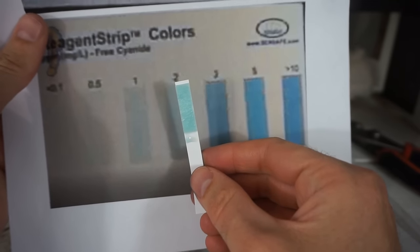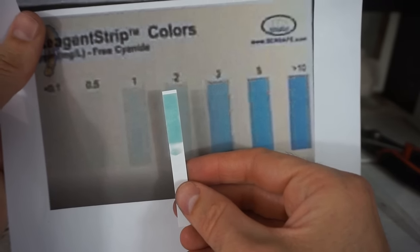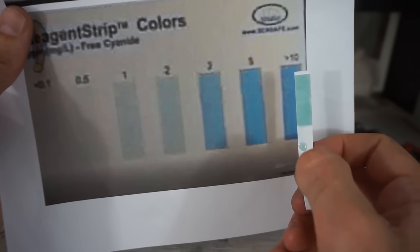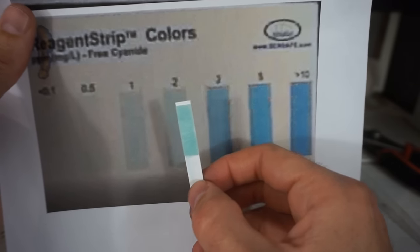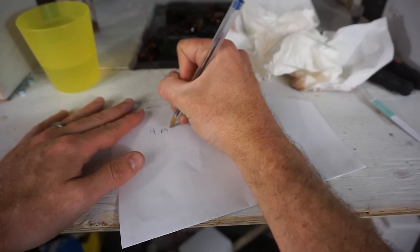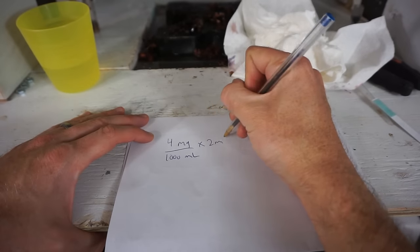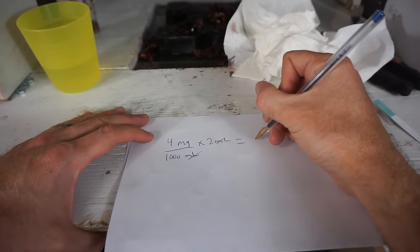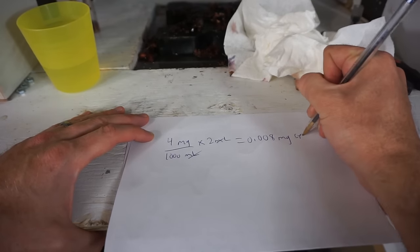This is kind of hard to tell but I would say this is around 2 to 3 parts per million, anywhere in there. Definitely not greater than 10. So I'm going to say 2 parts per million but we diluted it by half. So I had 4 parts per million, so that's about 4 milligrams per 1000 milliliters. And then I had 2 milliliters of that concentration. So that gives me around 0.008 milligrams of cyanide.